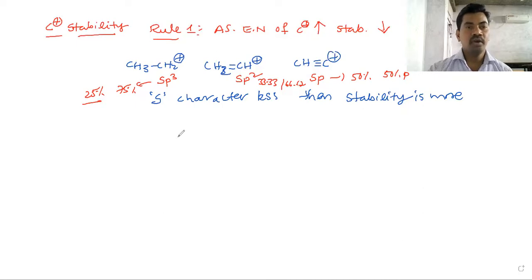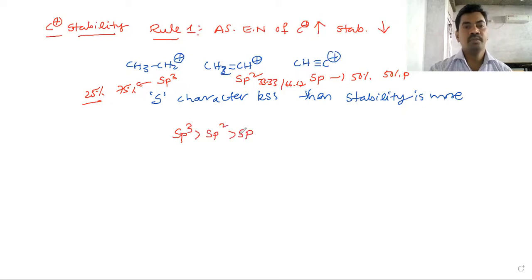So SP3 hybridized carbon is more stable than SP2, and SP2 is more stable than SP. The order of stability follows hybridization S-character. This order is important to suggest carbocation stability under Rule 1.